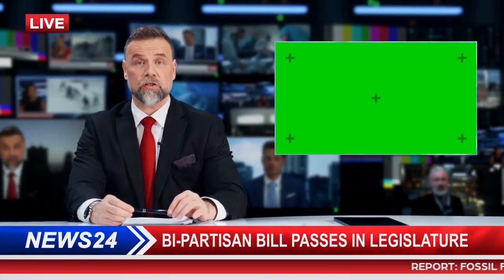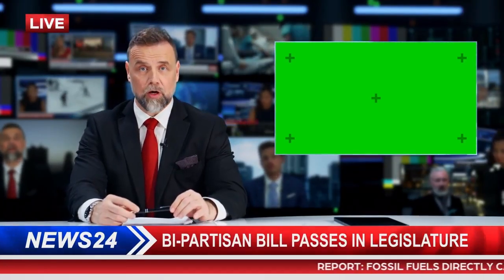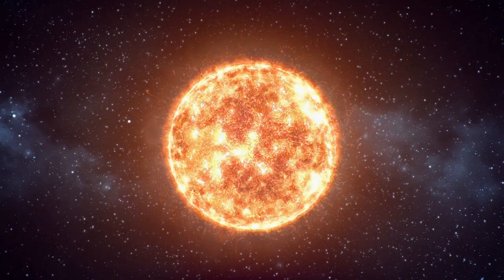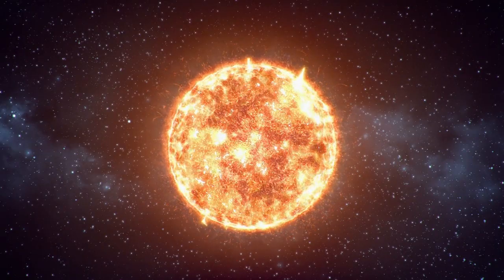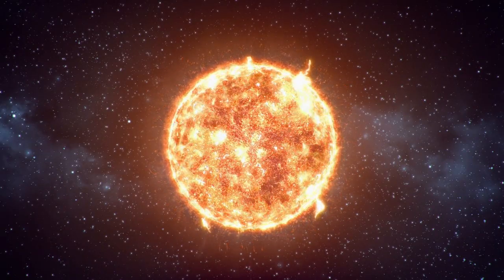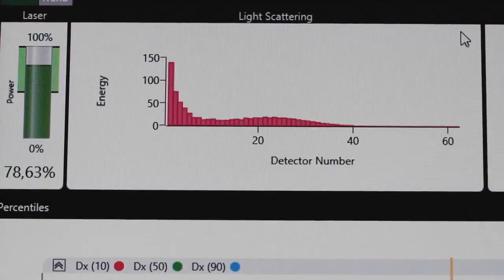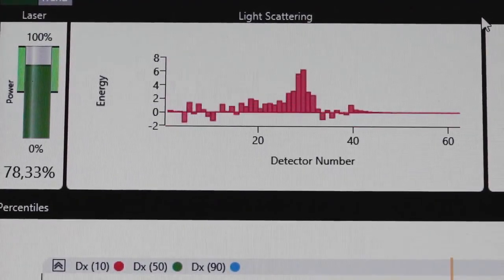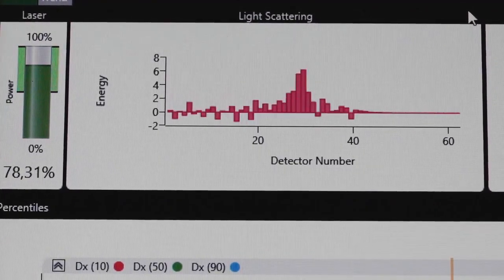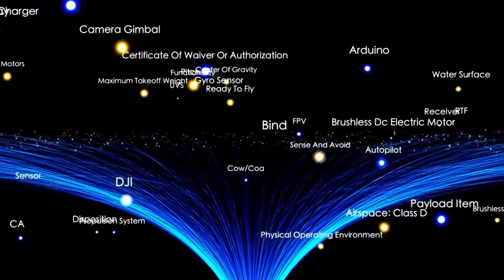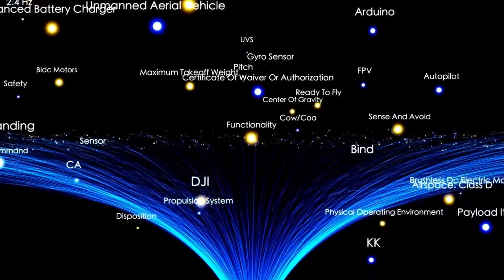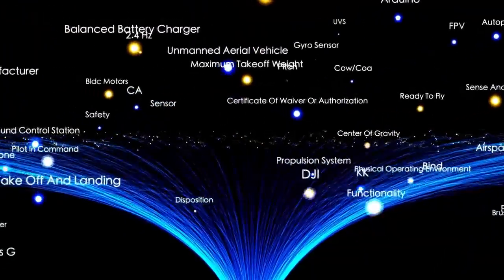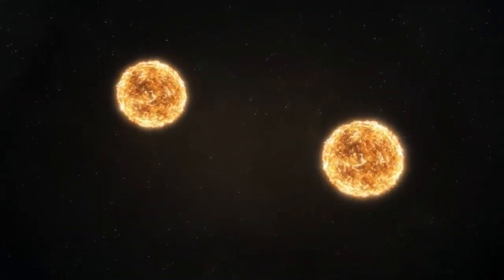Just when things couldn't get stranger, Webb found something even more outrageous. At the heart of one of these ancient galaxies sat a supermassive black hole, weighing more than a billion suns. In today's universe, that would be astonishing. But in the early universe, it was cosmologically absurd. Black holes are thought to grow slowly, over billions of years, by feeding on gas, dust, and stars. Even the most optimistic growth models can't explain how such a monster could exist within just 400 million years. It would be like finding a fully grown adult who was born an hour ago.